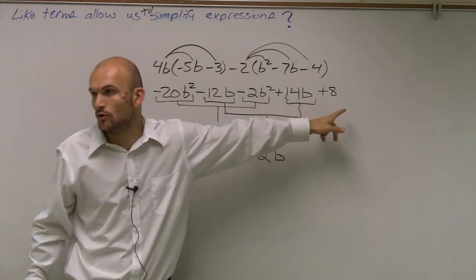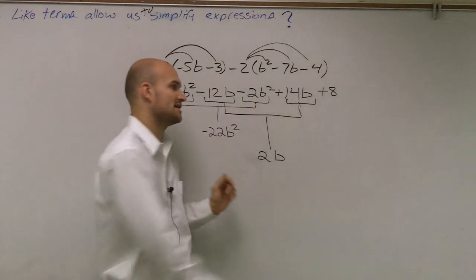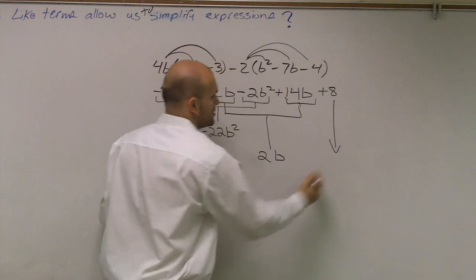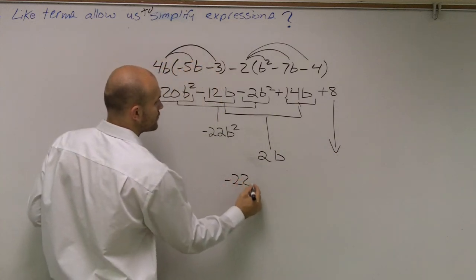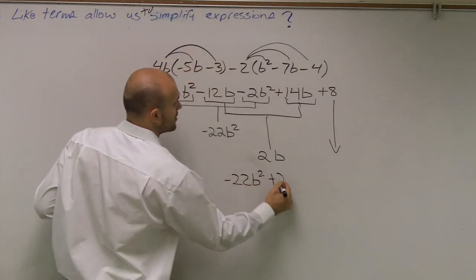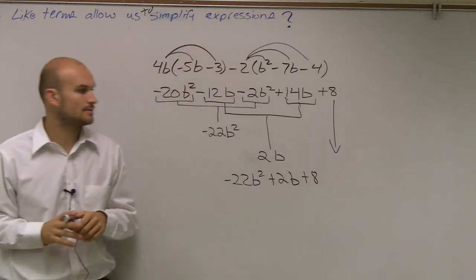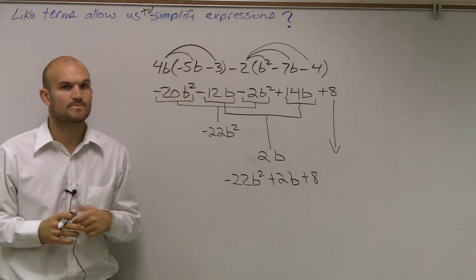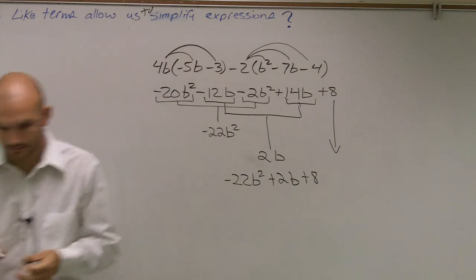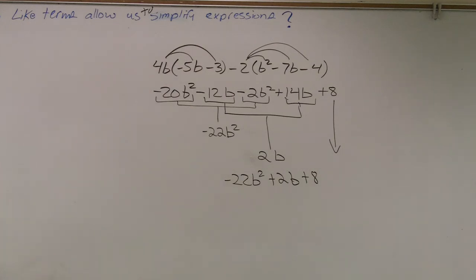Then, I look at here, and 8 is my only numeral that I have, so I can just bring that down in the answer. So my final solution is a negative 22b squared plus 2b plus 8. Okay? That's it. That's all you can get.